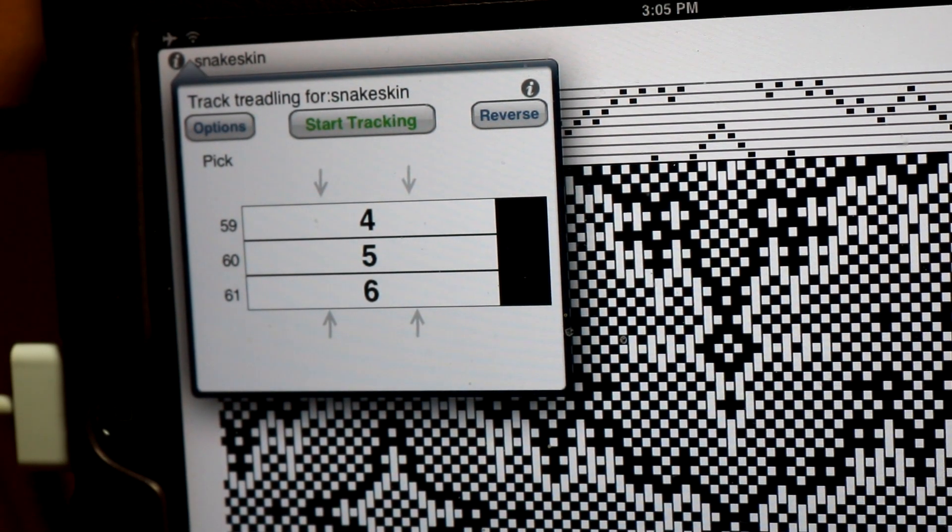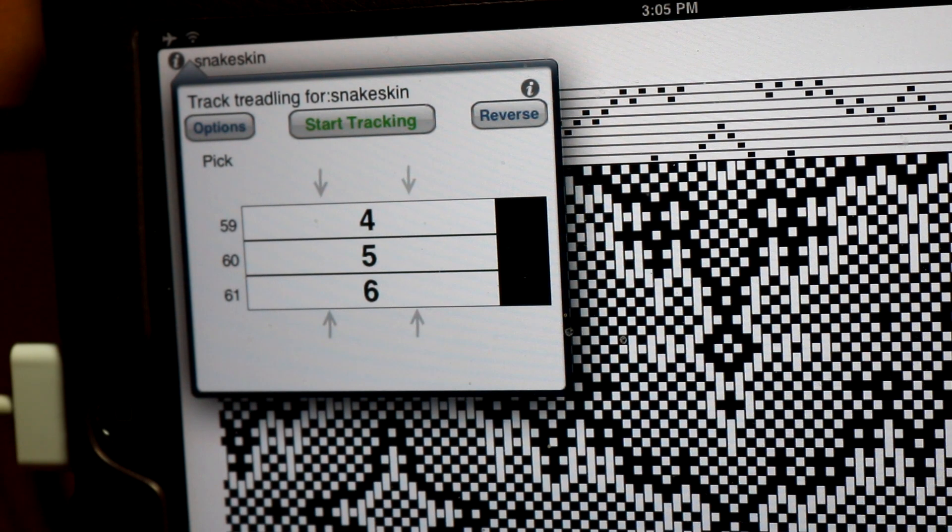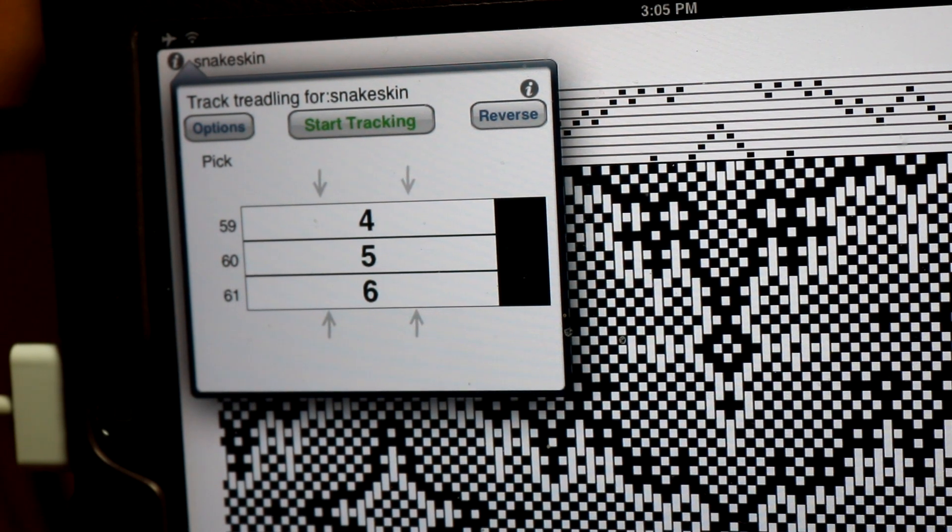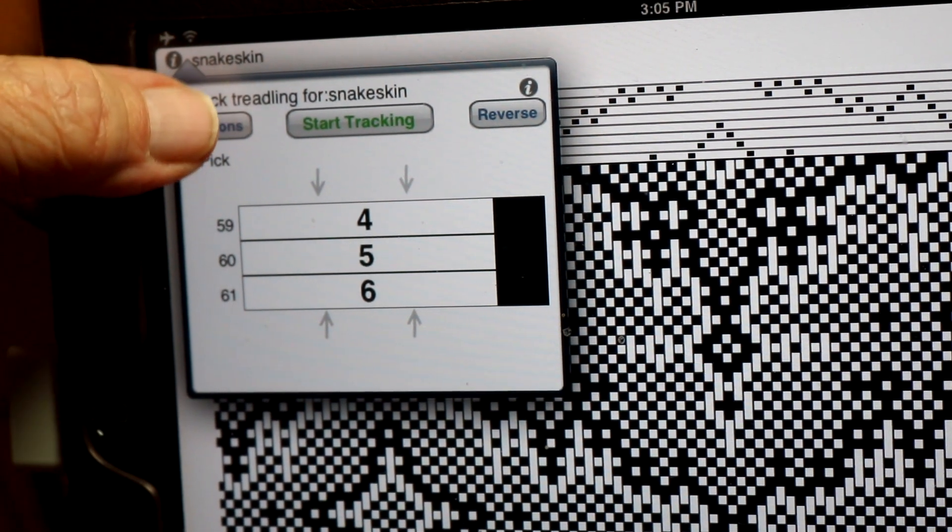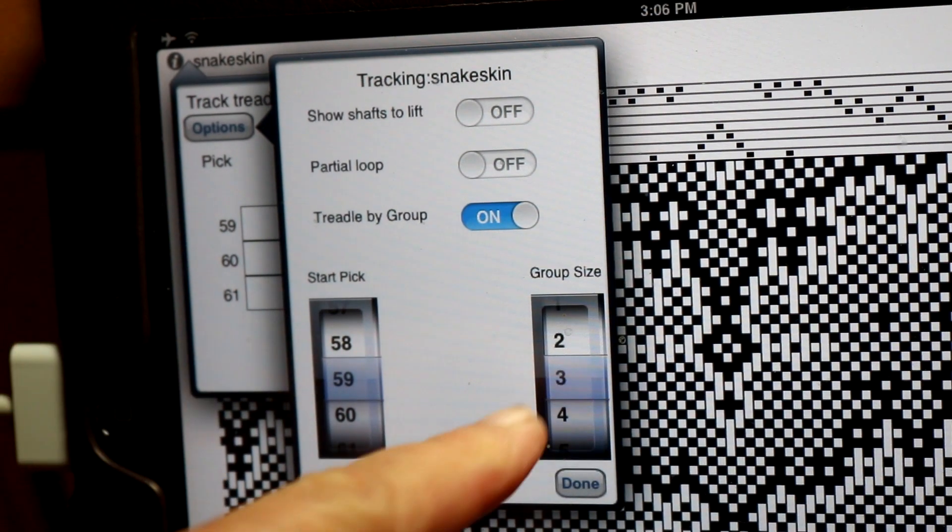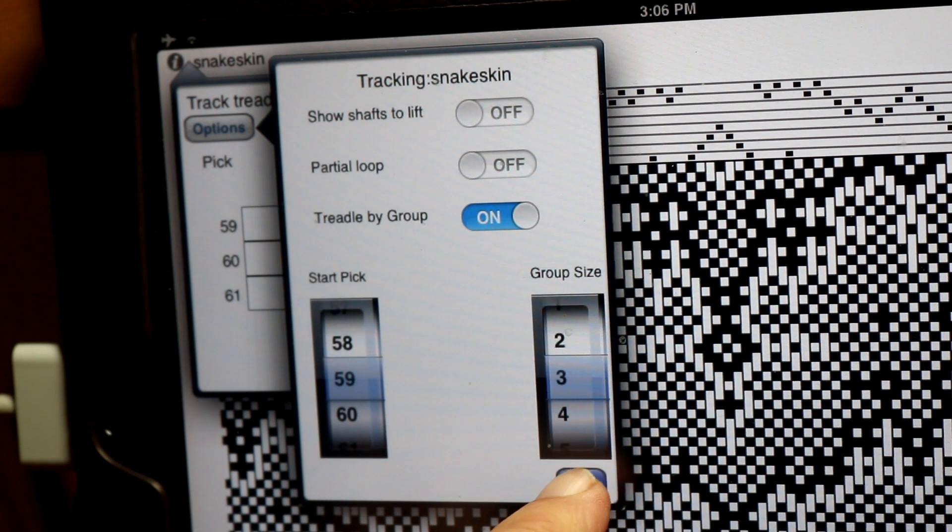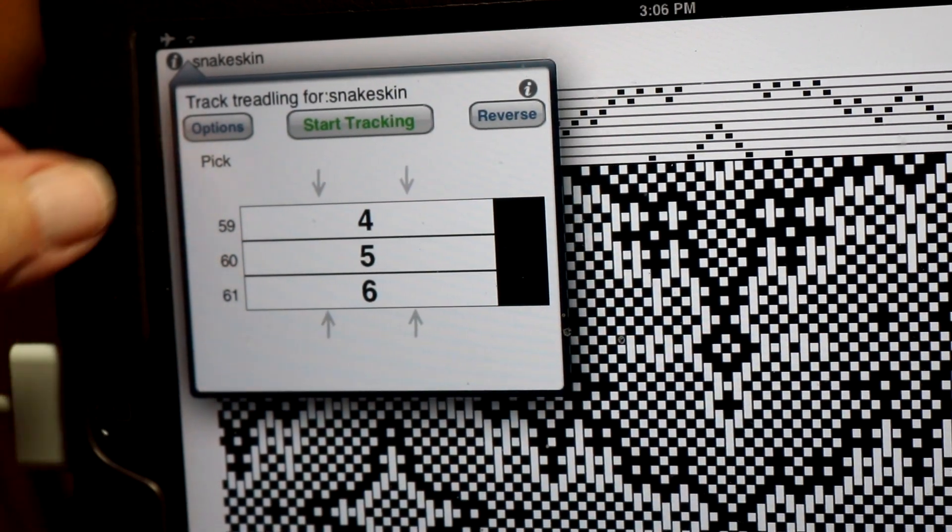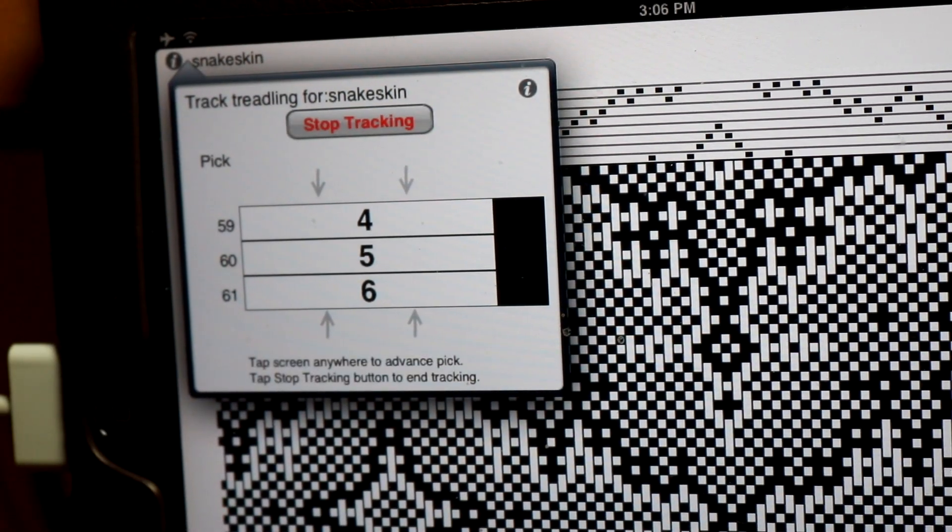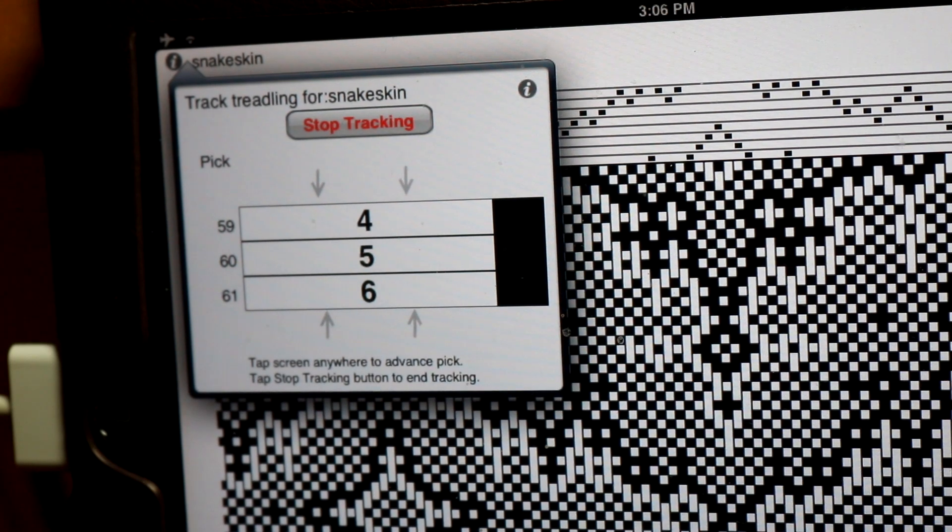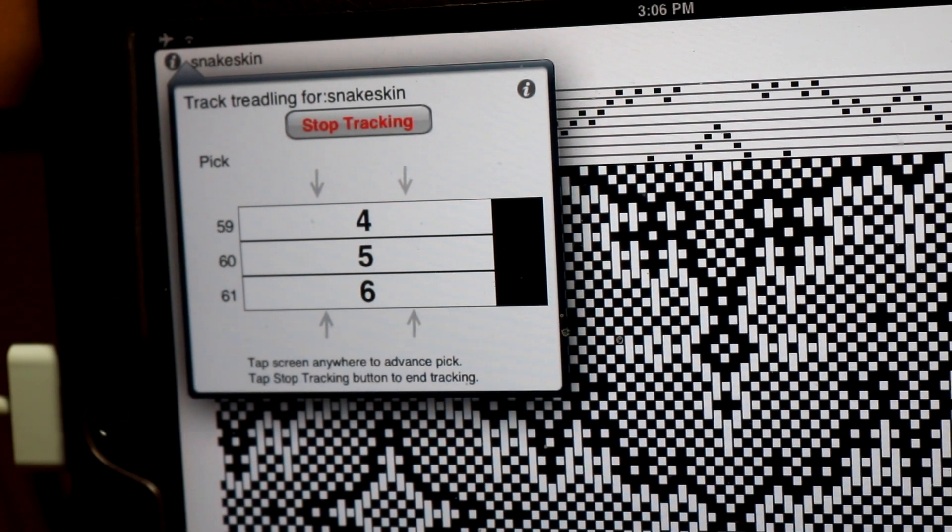I love using iWeaveIt for treadling. There are options in the upper left corner where you can choose how many group sizes you want to work with. As you're tracking, it's easier to remember three at a time and it goes faster.